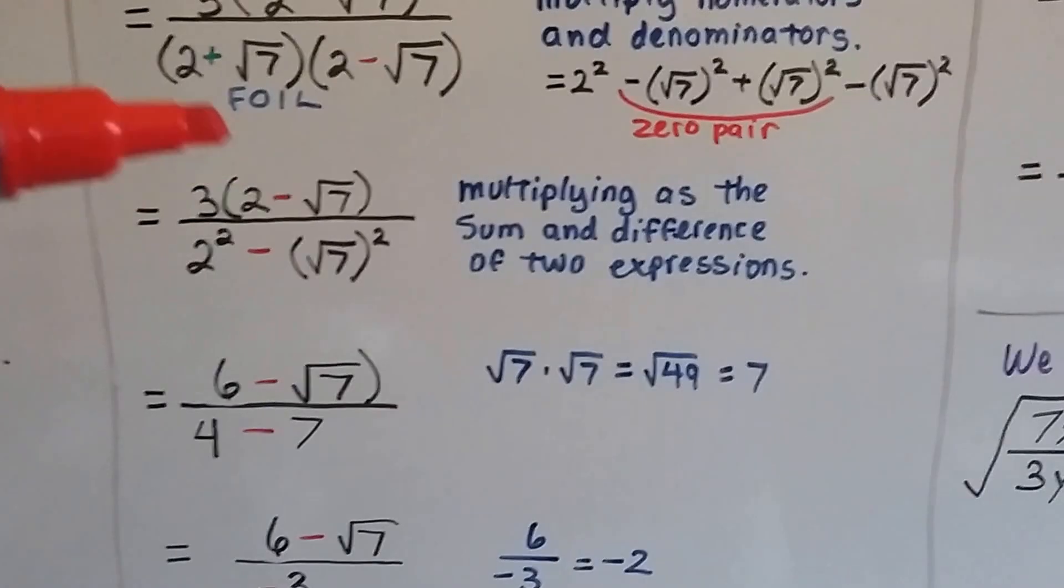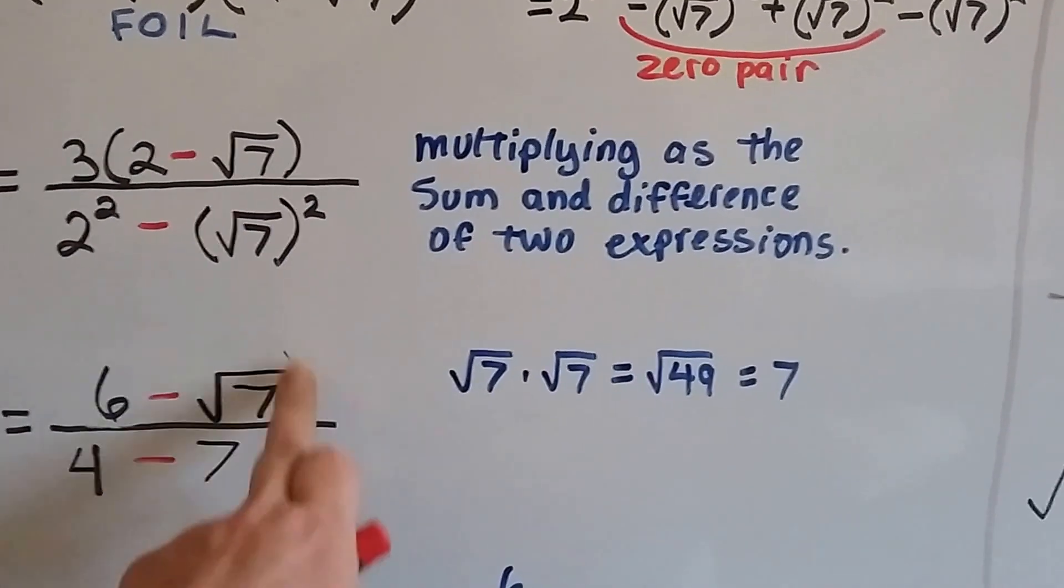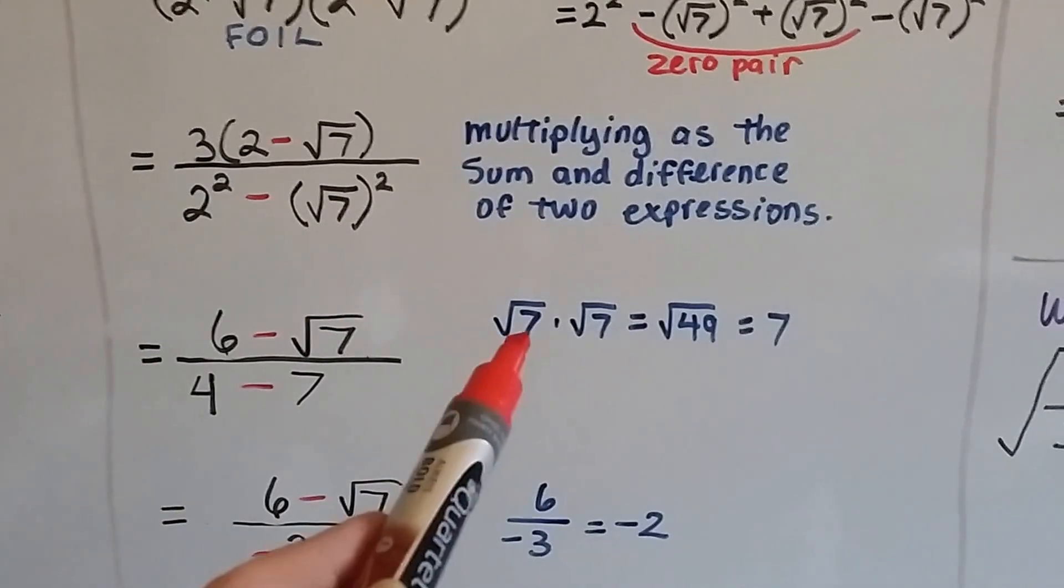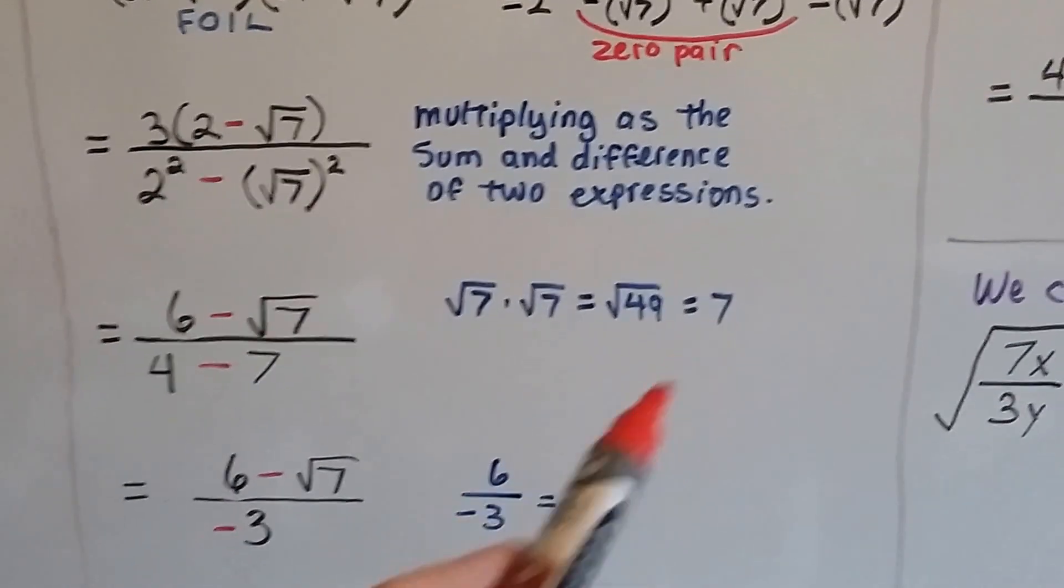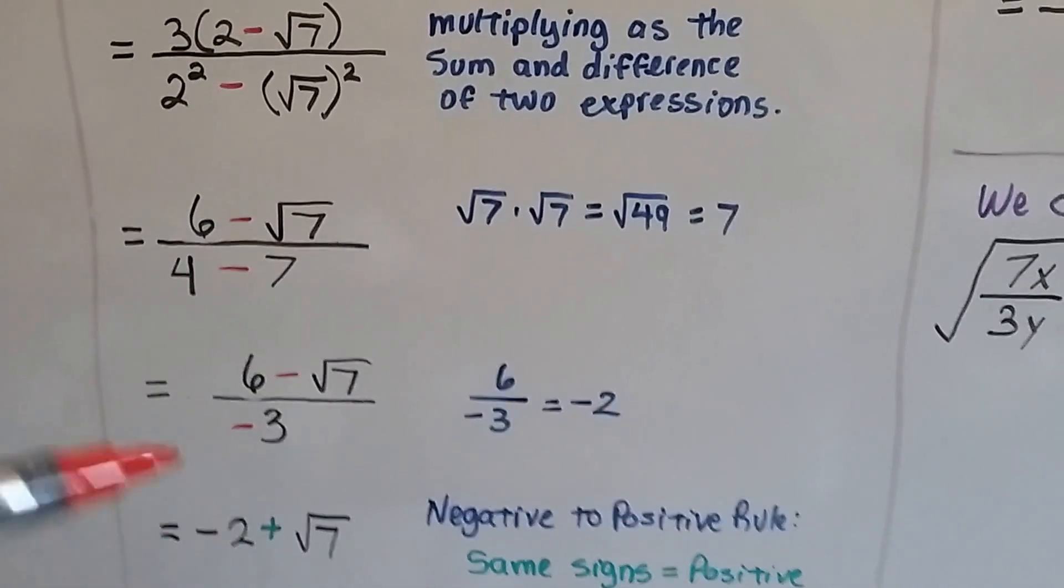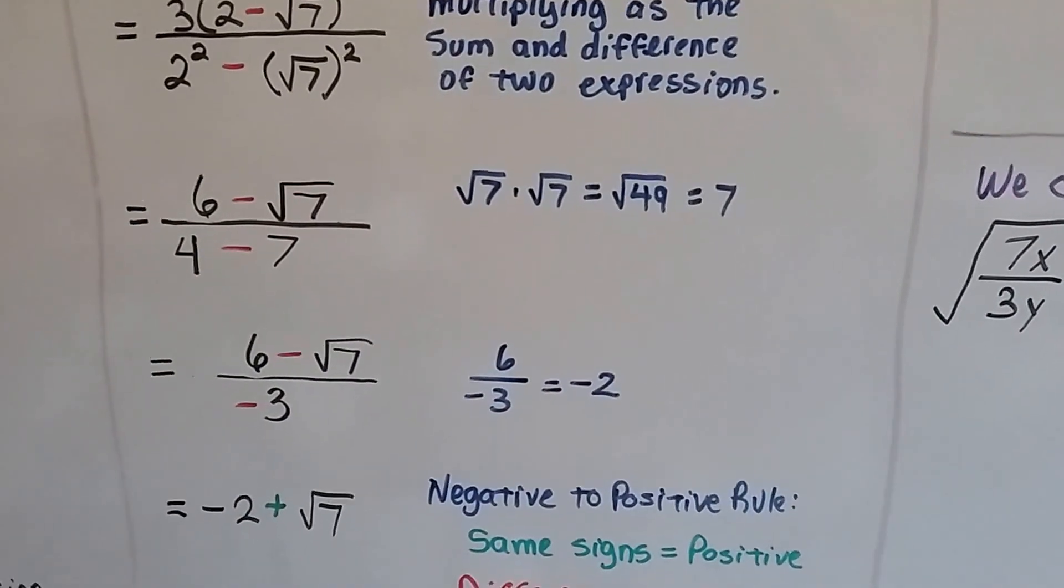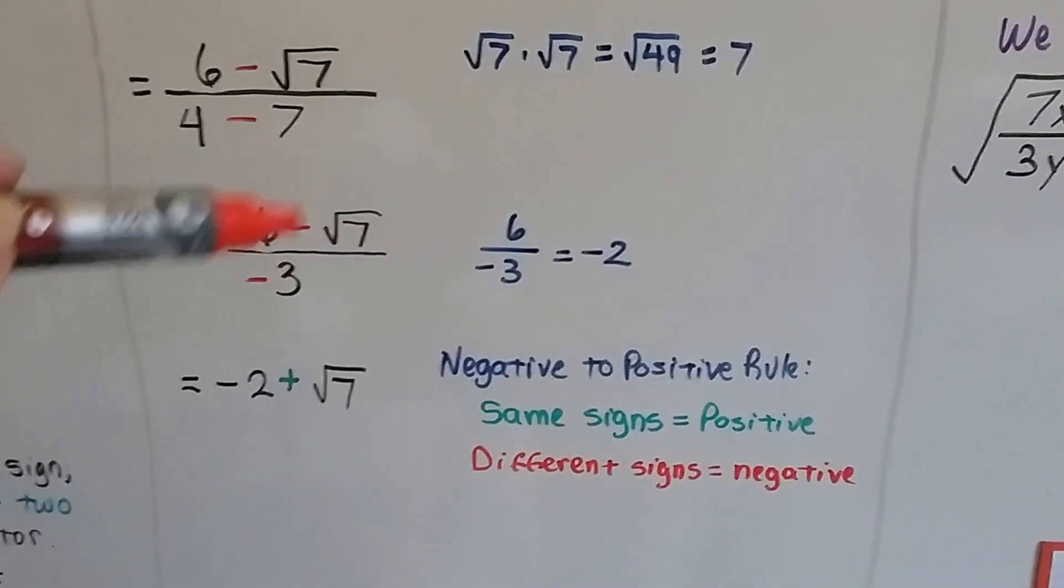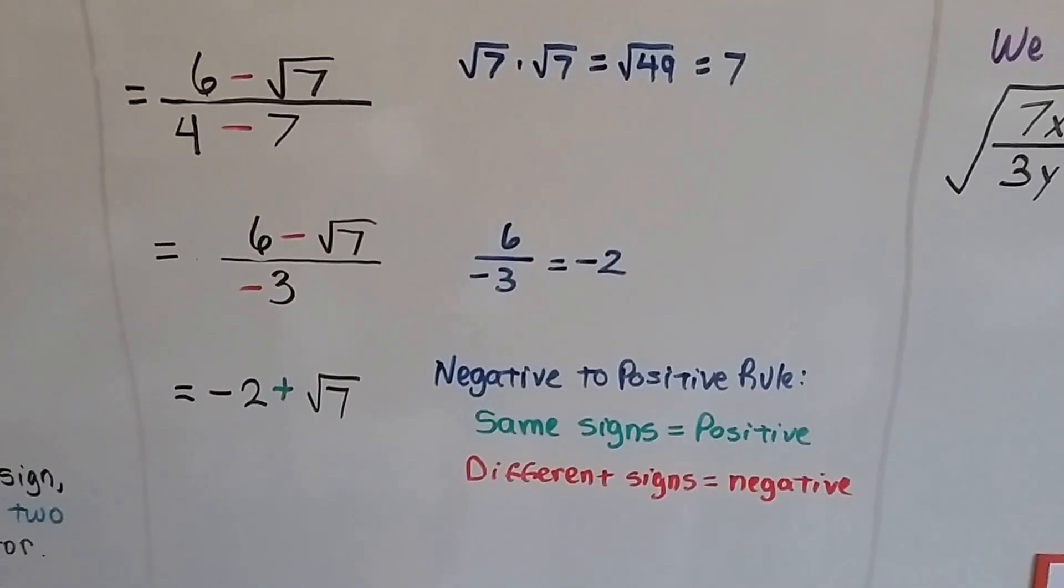So all we're left with is this 2 squared minus the square root of 7 squared. We multiply as the sum and differences of two expressions. Now, 3 times 2 is 6 minus the square root of 7. And this is 4 minus 7 because the square root of 7 times the square root of 7 is the square root of 49, and the square root of 49 is just 7. So we were able to remove that radical sign. 4 minus 7 is negative 3. We've got a positive 6 over a negative 3. That's going to give us negative 2. And this is going to become a plus sign because of the negative to positive rule. We've got the same signs, it becomes positive. When we have different signs, it becomes negative.